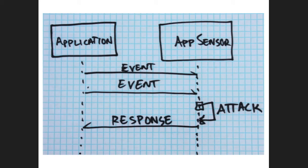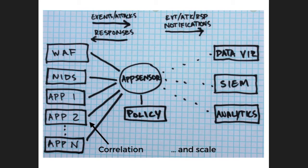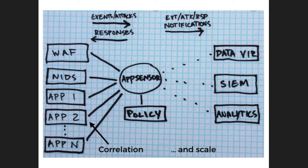This is the sequence diagram for that. In the reference implementation, you have a WAF, network intrusion detection, your own applications — whatever your systems are. We just provide integration points. You have some set of systems able to detect events or attacks, and something is signaling that data to AppSensor. AppSensor uses a policy mechanism right now — static — your security organization defines policy, and AppSensor uses that policy to make decisions. Responses get piped back to the original application, and it will signal that data out to whoever you want to notify: visualization tools, a SIEM, analytics, whatever you want.